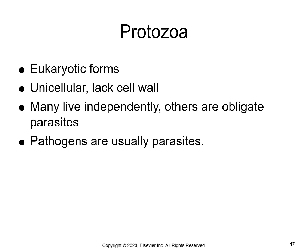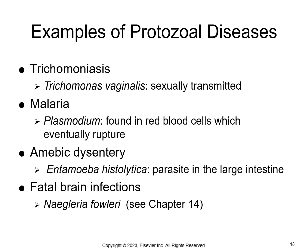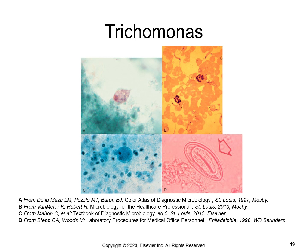Then we have protozoa. Protozoa are more complex — they're eukaryotes, so they have a nucleus. They're unicellular and lack a cell wall. They can live independently, on dead organic matter, as parasites, or on or in another living host. The pathogens — the infection-causing ones — are usually parasites. Some examples are trichomoniasis, which is a sexually transmitted infection, malaria, and amoebic dysentery, which is a severe form of diarrhea.